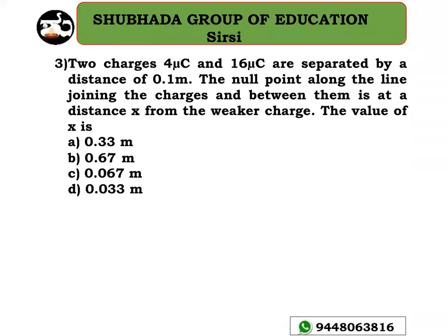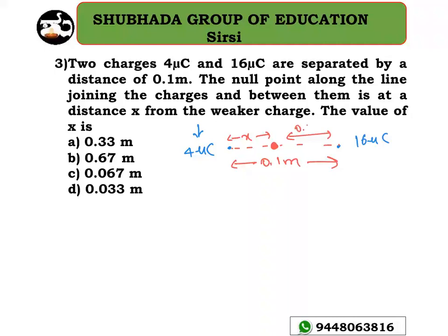Next problem: two charges of 4 micro coulombs and 16 micro coulombs are separated by a distance of 0.1 meter. The null point along the line joining the charges and between them is at a distance x from the weaker charge. Drawing the diagram: 4 micro coulombs is the weaker charge and 16 micro coulombs is the stronger. The null point is at distance x from the weaker charge, so the distance from the stronger charge is 0.1 minus x.